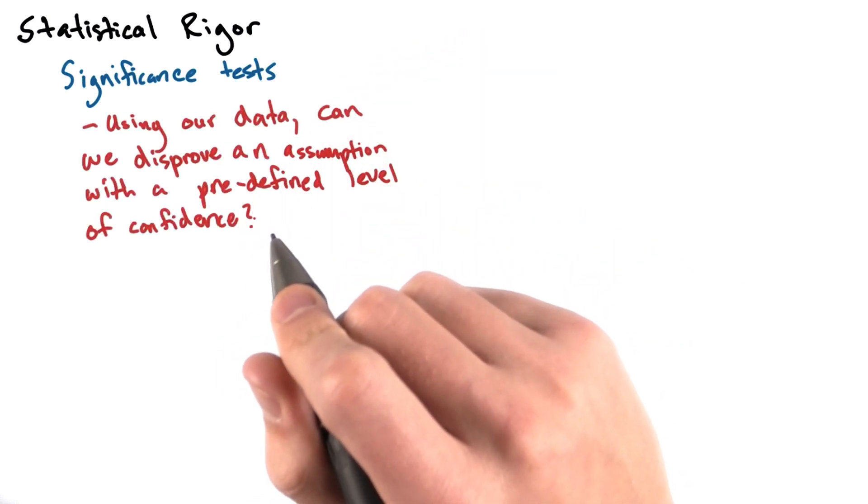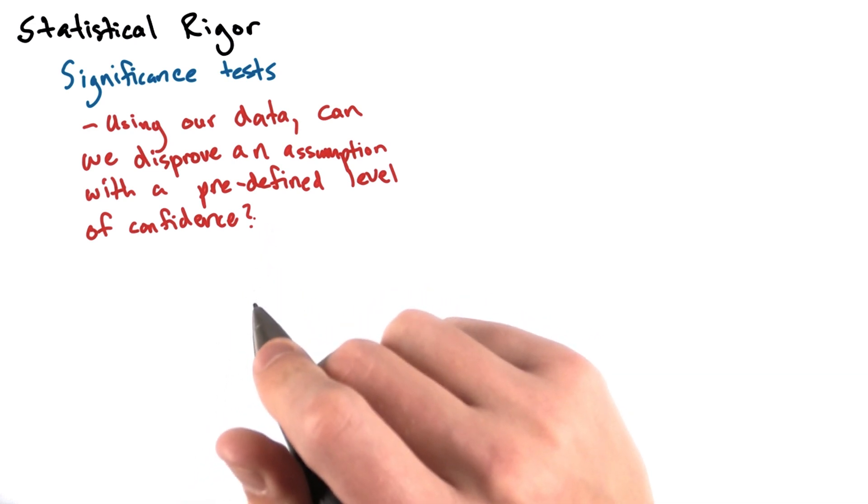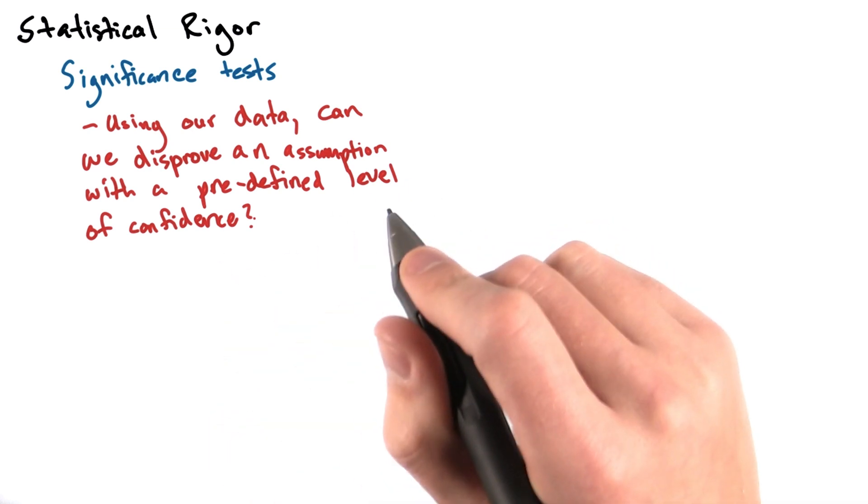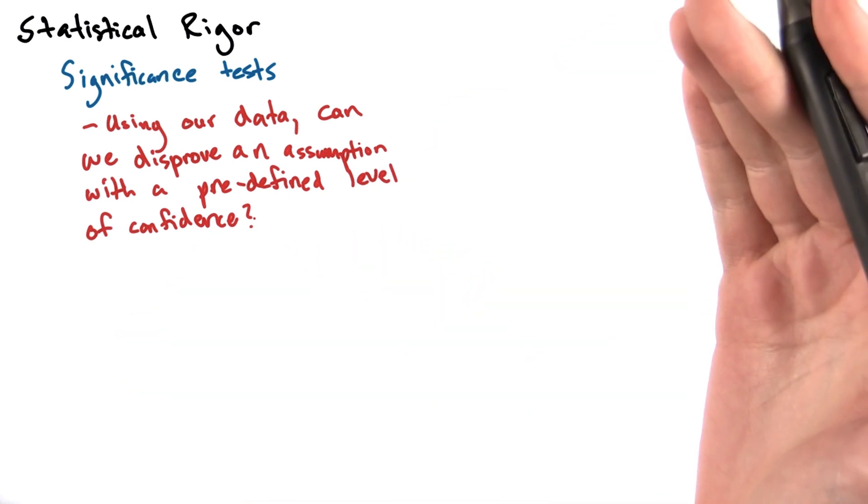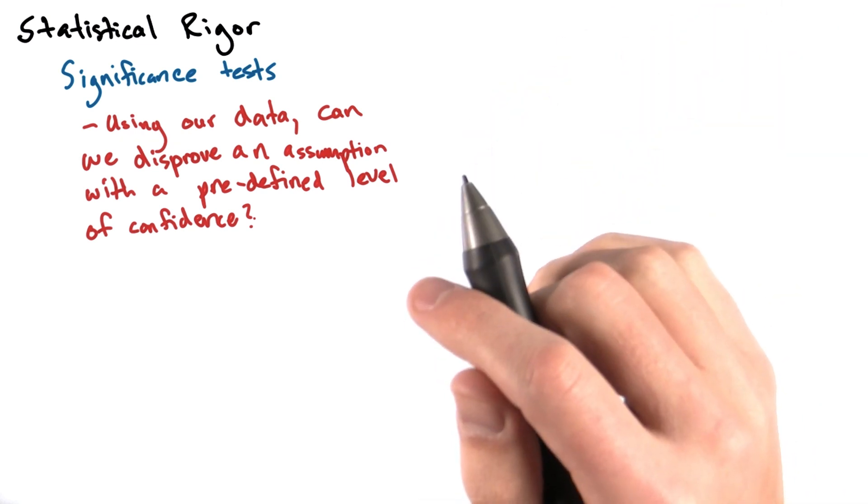Let's first discuss at a high level why statistical rigor is important. Let's say you worked in an office of 1,000 people and wanted to find out what the most popular favorite color in your office was. It'd be a lot of work to ask all 1,000 people, so you decide to just poll 10 people to get a pretty good idea of the office's favorite color.